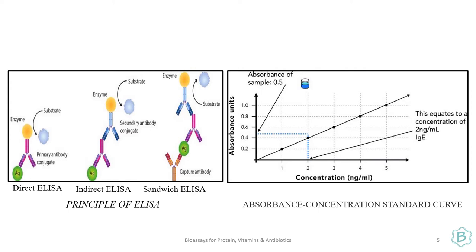The three ELISA types are direct ELISA, indirect ELISA, and sandwich ELISA. In direct ELISA, your antigen is captured by a single antibody conjugated to an enzyme for detection. In indirect ELISA, your antigen is captured by an antibody which is again captured by a secondary antibody conjugated to an enzyme for detection. In sandwich ELISA, the antibody is immobilized on a matrix and captures the antigen, which is then captured by another primary antibody — which can further have a secondary antibody to help in its detection.